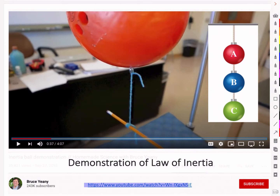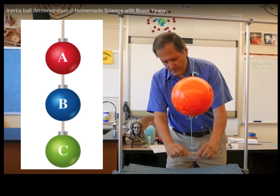One last example that relates back to the earlier examples with the three festive baubles is this demo by retired American physics teacher Bruce Yaney. We have a bowling ball suspended by a string, with another string hanging from below it. If we apply a force at the bottom, we're increasing the tension in the top string — just as the tension was highest at the top with the festive baubles, here it supports the weight of the bowling ball plus the force applied to the pencil below.